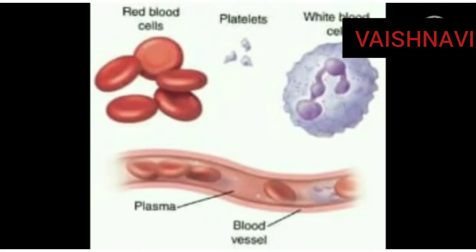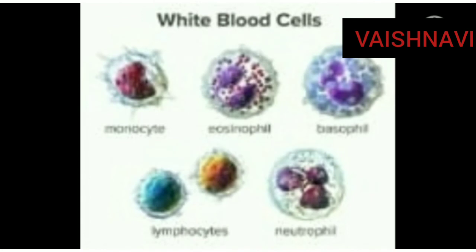Blood has blood cells. Blood cells are of three types: they are RBC, WBC, and platelets. RBC means red blood cells. WBC means white blood cells. The lifespan of RBC is 120 days. RBC cells are also known as erythrocytes. WBC cells are also known as leukocytes. These cells are not having color, for example in cockroach, snail, etc.